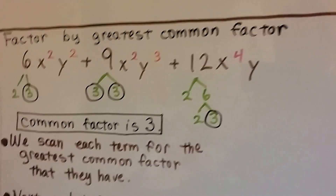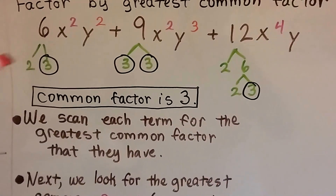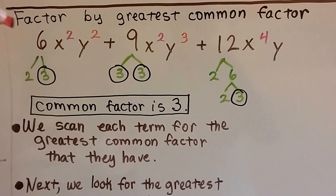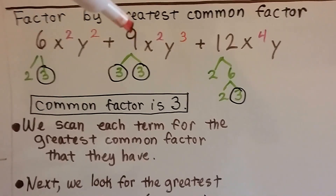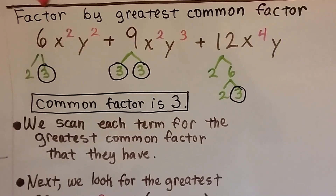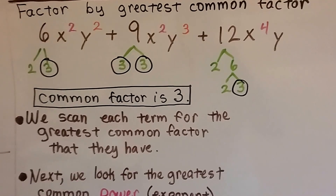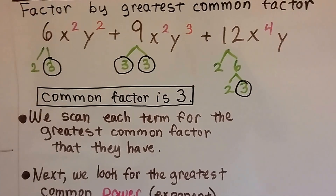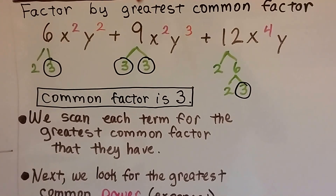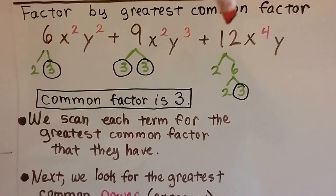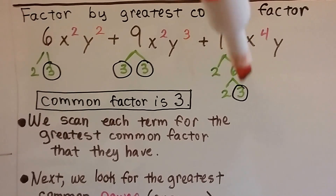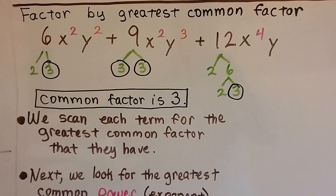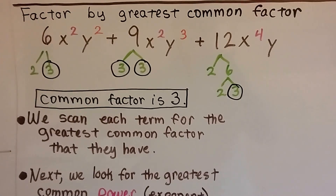We can factor by greatest common factor. Here are our factor trees. We've got this big long polynomial with coefficients of 6, 9, and 12, and it's got exponents on the variables. We ask ourselves: what are the factors of 6? — 2 and 3. What are the factors of 9? — 3 times 3. What are the factors of 12? — 2 times 6, and 6 can be broken into 2 times 3. What do they all have in common? The common factor is 3. We scan each term for the greatest common factor that they have.